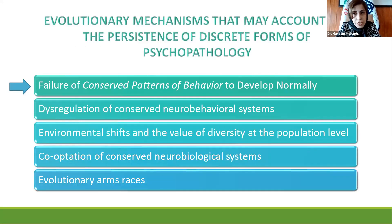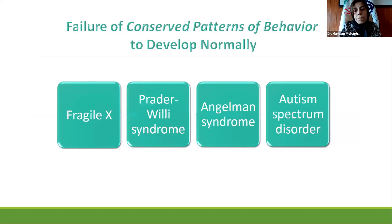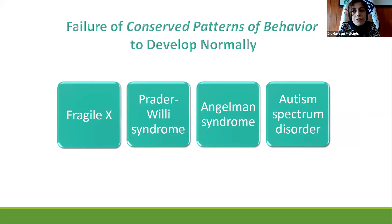It seems that the cascade of evolutionary events responsible for the emergence of our species also makes us vulnerable to certain forms of psychopathology. The first mechanism for the persistence of discrete forms of psychopathology is failure of conserved patterns of behavior to develop normally. If it depends on the normal expression of non-specific genes at the correct time and place in the developing brain, then we remain vulnerable to events which can disrupt the development of these neural circuits. Examples include Fragile X syndrome, Prader-Willi syndrome, Angelman syndrome, and ASD.